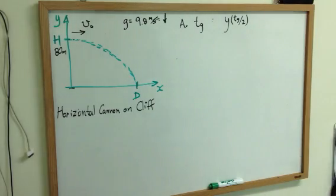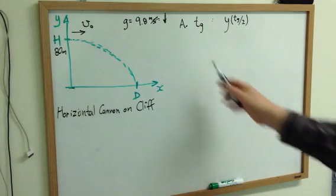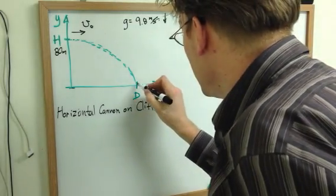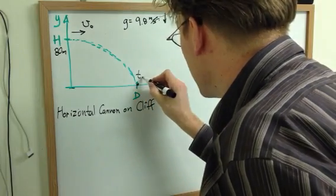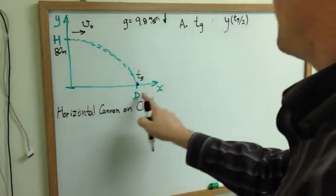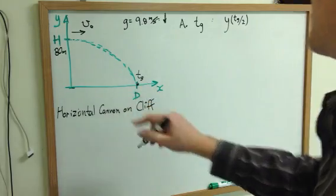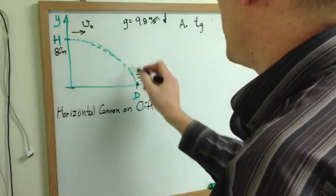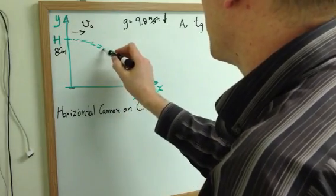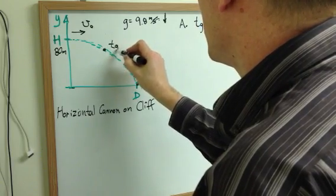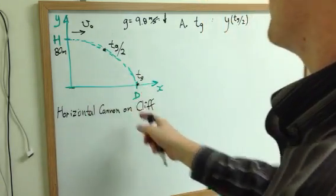By request, this is the horizontal cannon on a cliff tutorial part A. It says that at some time t_g, which I guess stands for the time that it hits the ground, if you know that time it hits the ground, then what vertical position will the cannonball be at half the time? So what's the position of the ball at the halfway point in time?